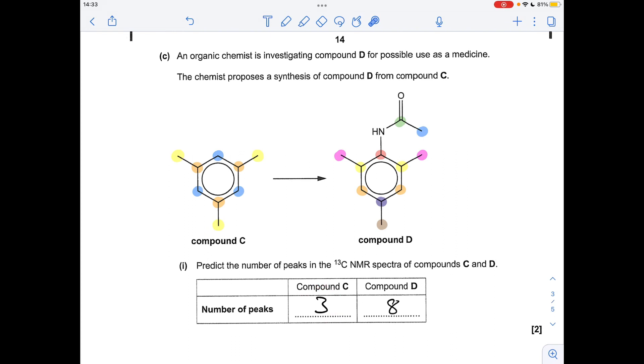In compound D we've got some unique carbon environments and some equivalent ones. So unique, unique, unique, they're equivalent, they're equivalent, they're equivalent, unique, unique. That's a total of eight environments, so eight peaks.